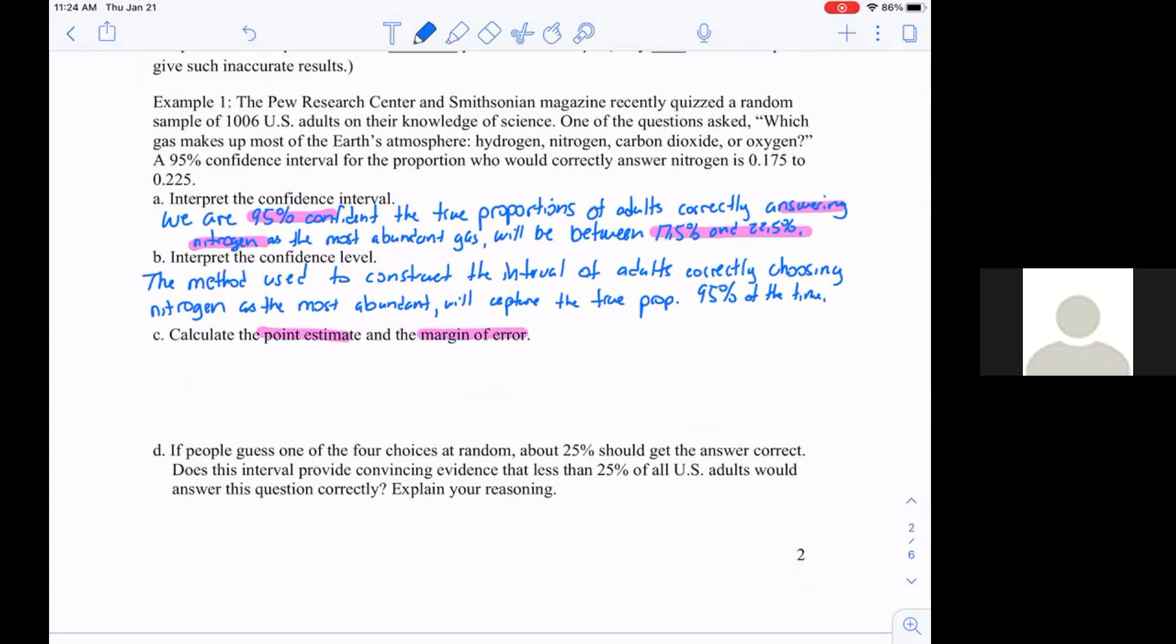Part C: calculate the point estimate and the margin of error. The point estimate is going to be the middle of the interval. Margin of error is the amount on both sides.